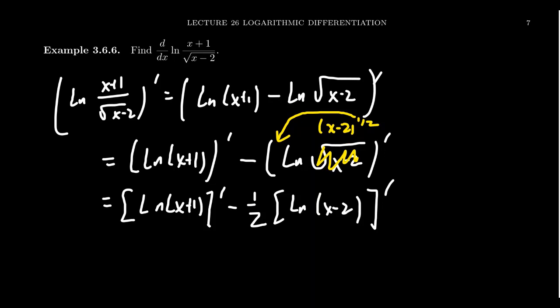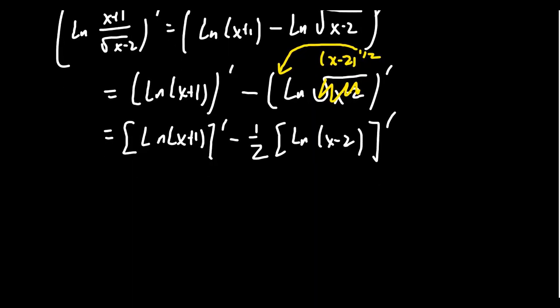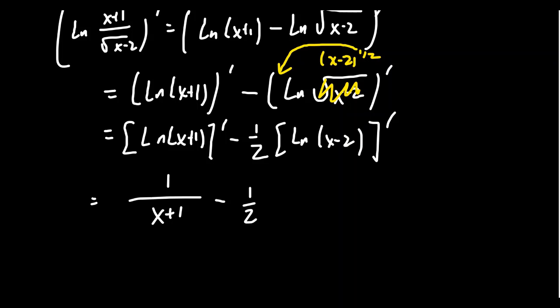When we take the derivative of these natural logs, we will have to use the chain rule, but it will be fairly benign. The derivative of the natural log of x plus 1 gives x plus 1 in the denominator, and the derivative of x plus 1 — which is 1 — in the numerator. Then for the next term, 1/2 times the derivative of the natural log of x minus 2 puts x minus 2 in the denominator and its derivative in the numerator. So the derivative looks like 1 over x plus 1, minus 1/2 times 1 over x minus 2.